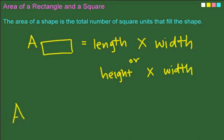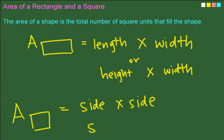The other one is area of a square, which is side times side, or side squared. Did you get that?